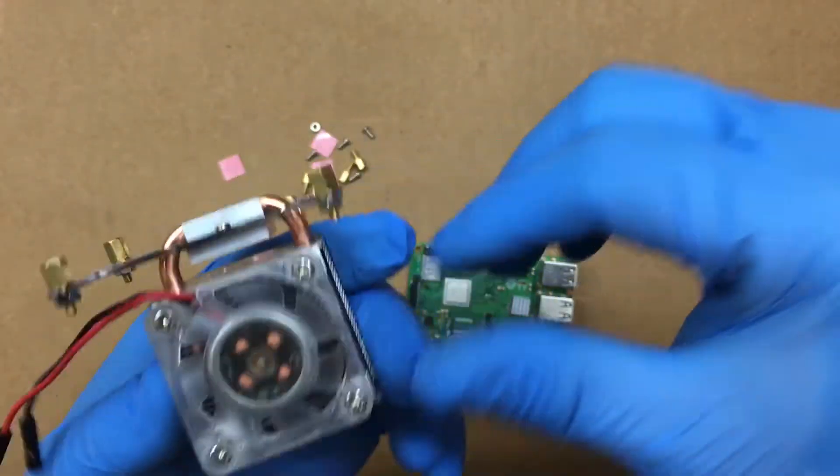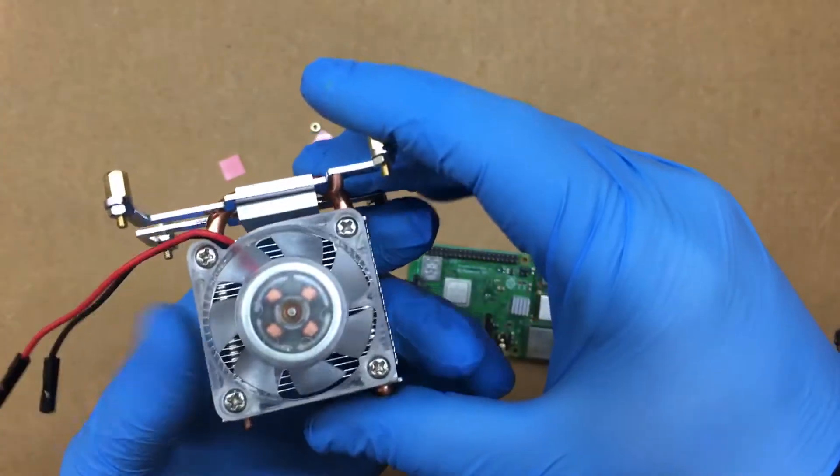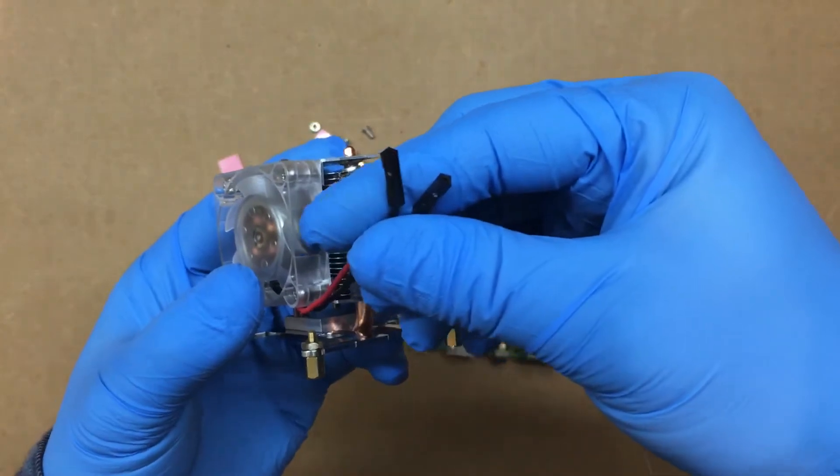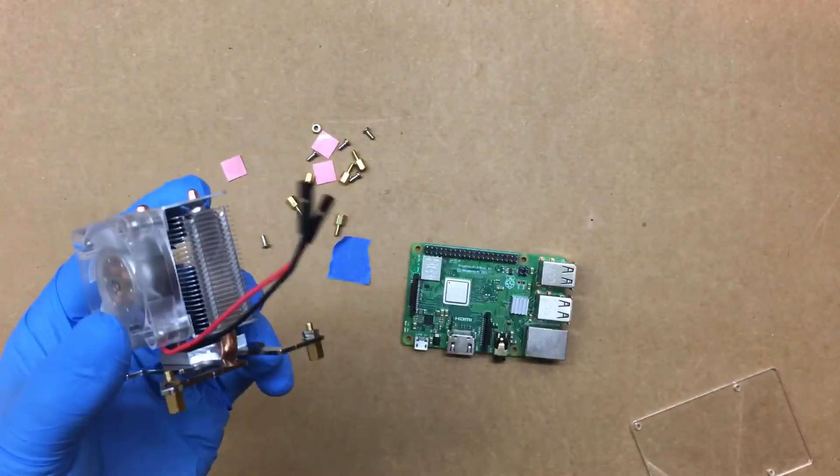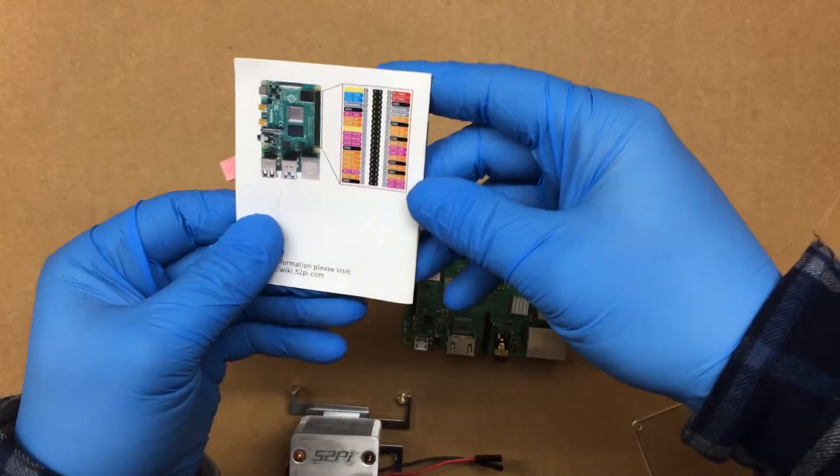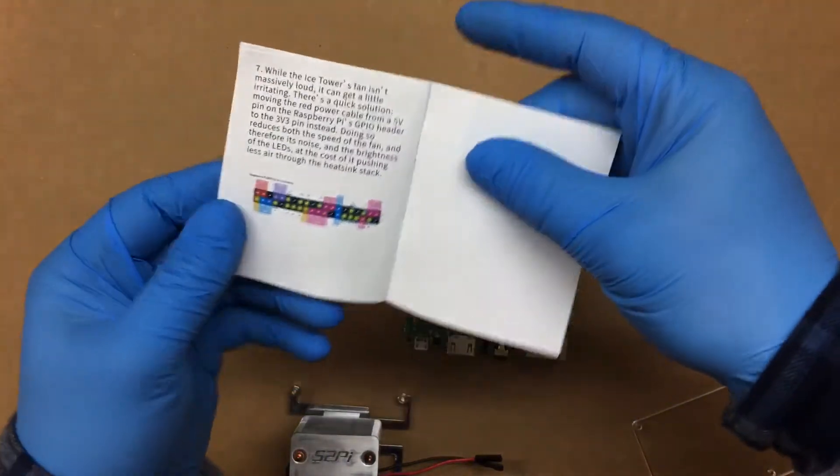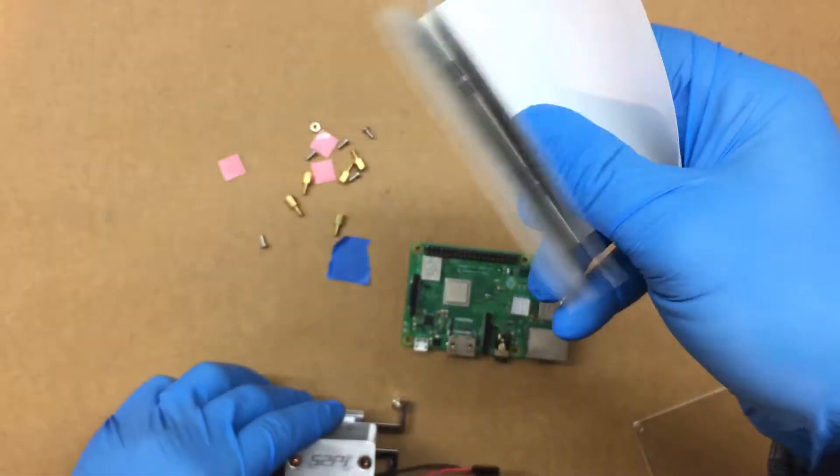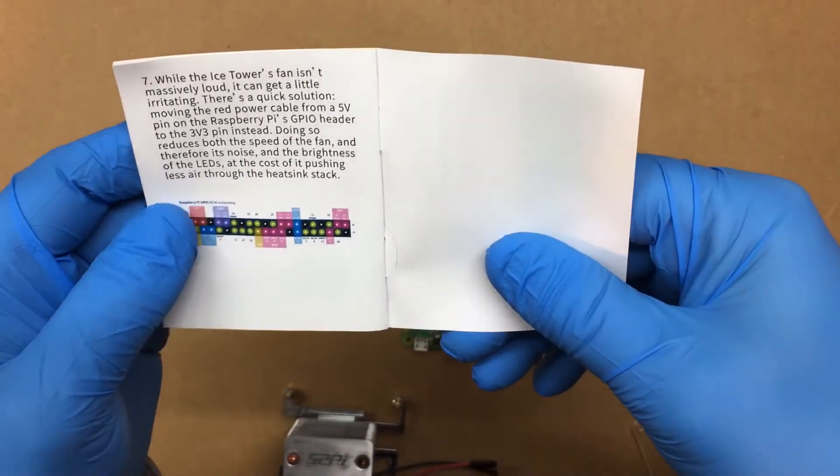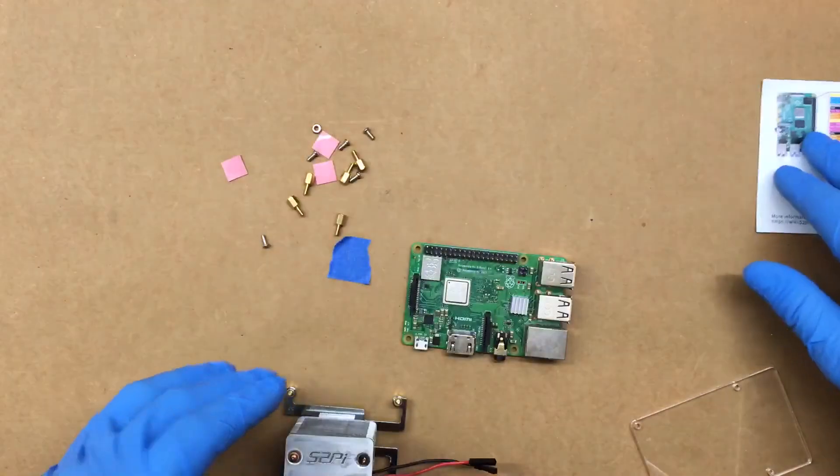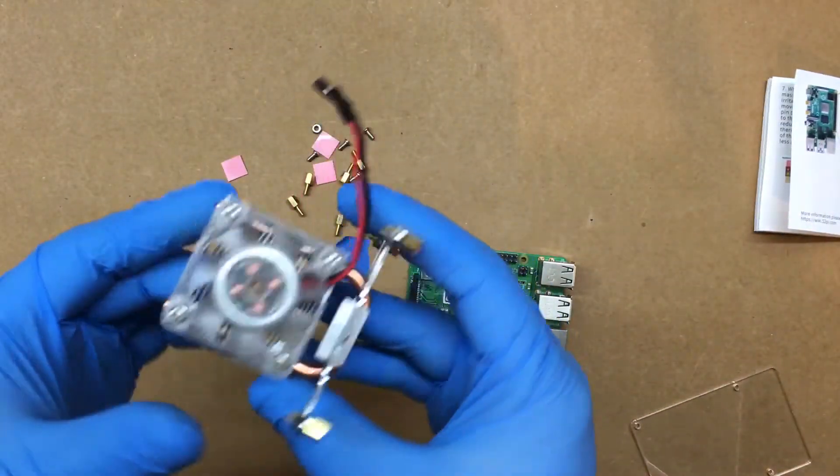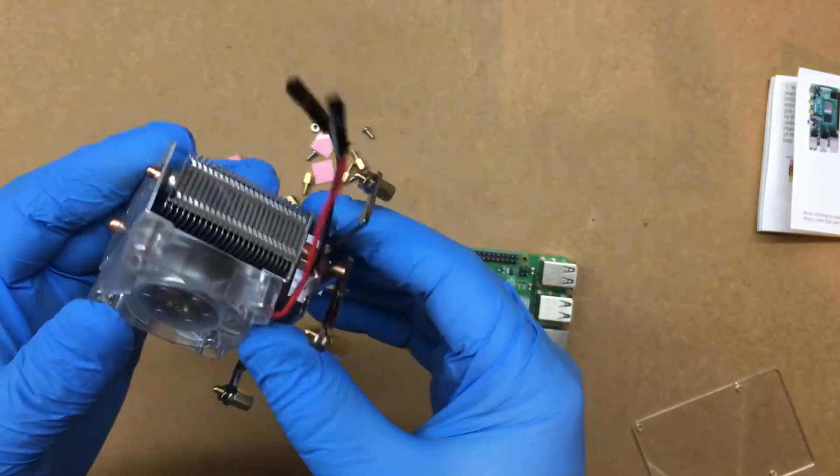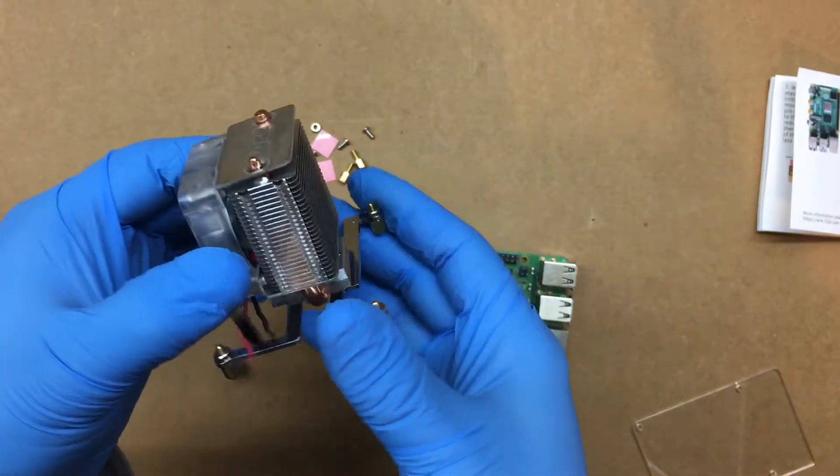Then this runs off of 5 volts. It says in the book, comes with this nice little book here, that you can run this off of 3.3 volts, the 3-volt pins if you want. Obviously, it won't move as much air and the lights won't be as bright, so plus it would help a little bit with the power draw.